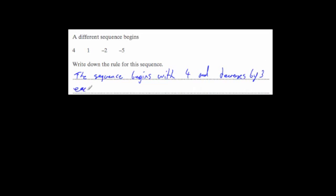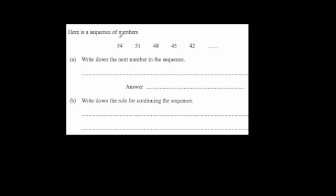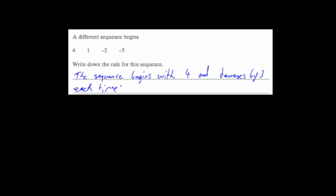Last question: here's a number sequence — 54, 51, 48, 45, 42. Write the next number. We're taking away 3 each time, so taking away 3 from 42 gives 39. The next number in the sequence is 39. The rule for continuing the sequence is: subtract 3 each time.